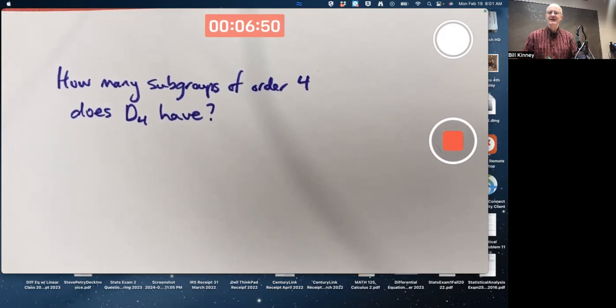So this first question is, how many subgroups of order 4 does D4 have? If you ever encounter such a question on a test, the first thing you should think about is, does D4 have any elements of order 4? That's the first thing you should think about.